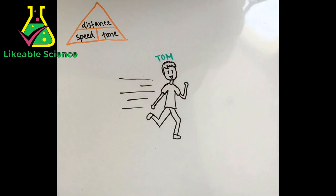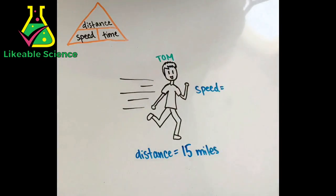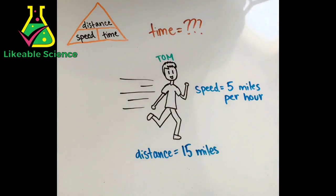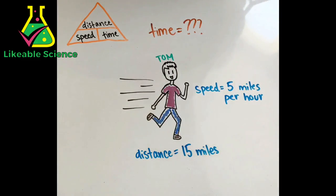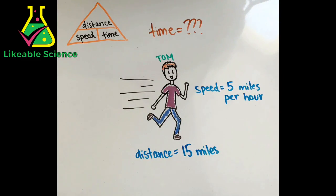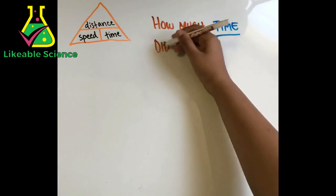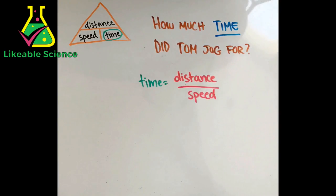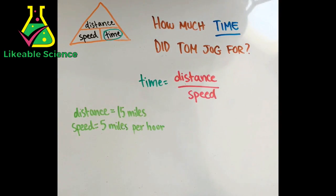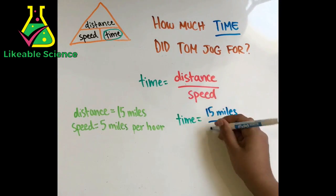Now let's solve for time. If Tom is jogging at a pace of 5 miles per hour and travels 15 miles, how much time was Tom jogging for? Our equation we need to solve is time equals distance over speed. If we plug in the numbers we have, we get time equals 15 miles divided by 5 miles per hour.